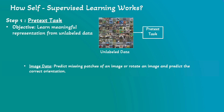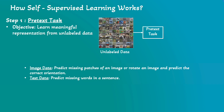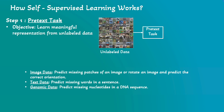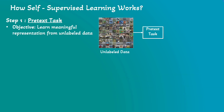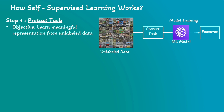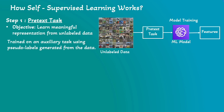For example, with image data you can predict missing patches of an image or rotate an image and predict the correct orientation. With text data, you can predict missing words in a sequence. With genomic data, you can predict missing nucleotides in a DNA sequence. Once the pretext task is created, the next step is model training — train the model to solve the pretext task. The model learns to extract useful features from the data, such as embeddings or latent features. In this pretext task, the model is trained on auxiliary tasks with pseudo labels generated from the data, helping the model learn meaningful representations.